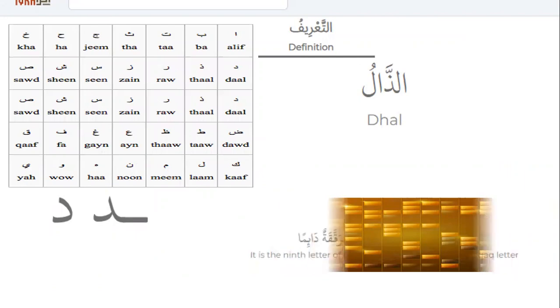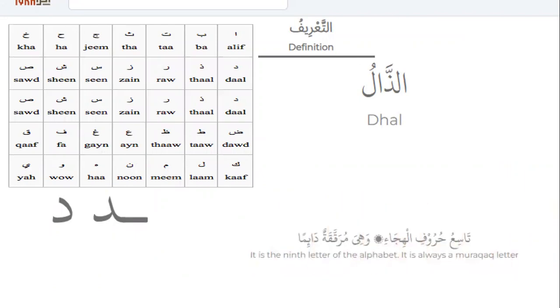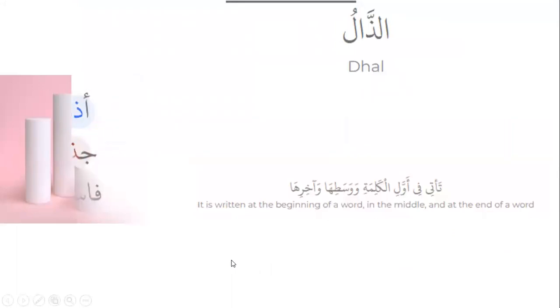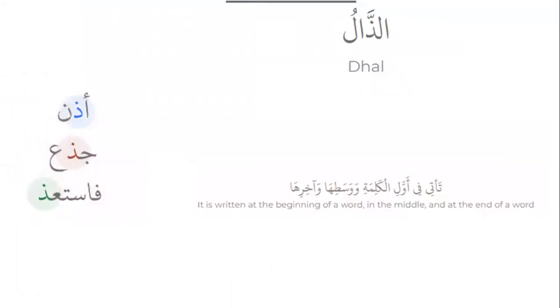Definition of Zal. Zal is the ninth letter of the alphabet. It is always a murakab letter — it is not a letter that we can find at the beginning of the word, or at the end of the word, or in the middle of the word, like: uzun in the middle, jiza in the middle, pasta at the end.